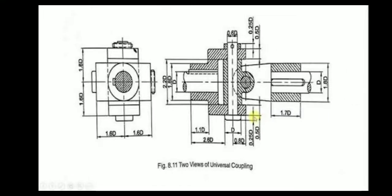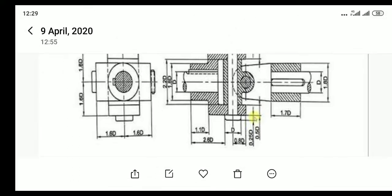In production drawing we are disassembling the component. Whatever the machine part is given, we have to disassemble and denote the parts according to the given drawing.